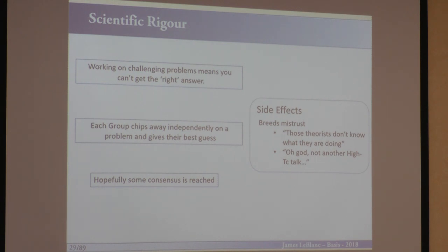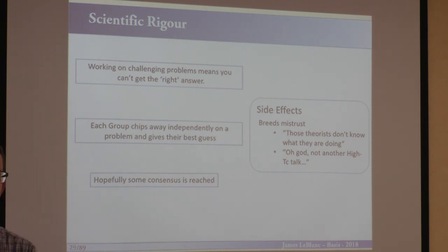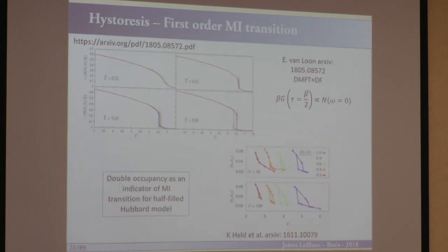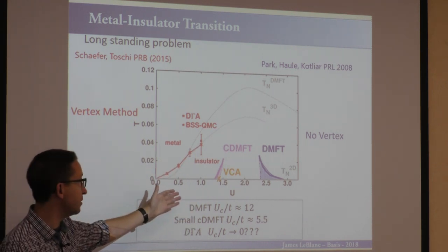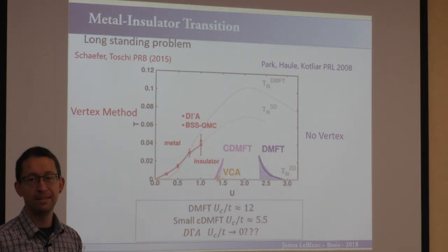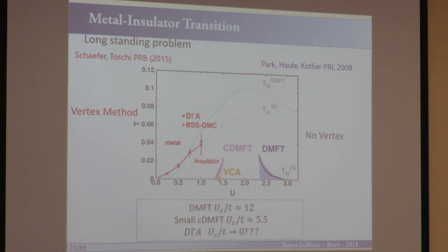This has a really bad side effect. I started my PhD working in high-TC cuprates, and high-TC cuprates has been a particularly caustic field for many years. The side effect of this level of uncertainty is it actually breeds mistrust. I've literally heard people say 'theorists don't know what they're doing' and 'not another high-TC talk.' People start to see it as not scientific rigor. So we have to be really careful — what does someone from outside the field do when they look at a plot where this group got that result, and another group got a completely different result?